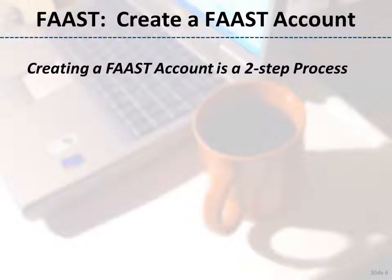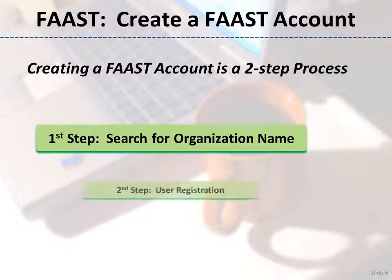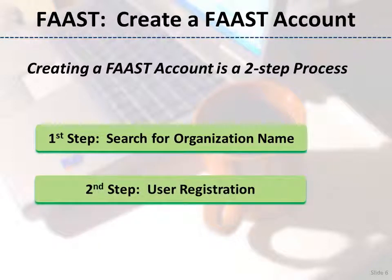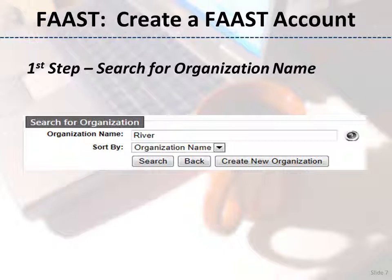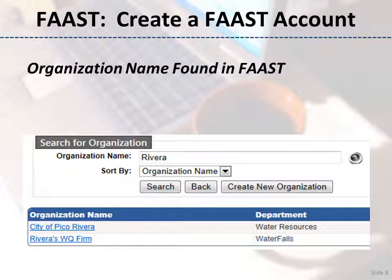Creating a FAST account is a two-step process. Step one is search for your organization name, and step two is user registration. In step one, the user selects the organization to be associated with their user account. Type part or all of the name of your employer and then click the Search button. If you find your organization's name in the database, click the name of the organization to start step two, user registration.